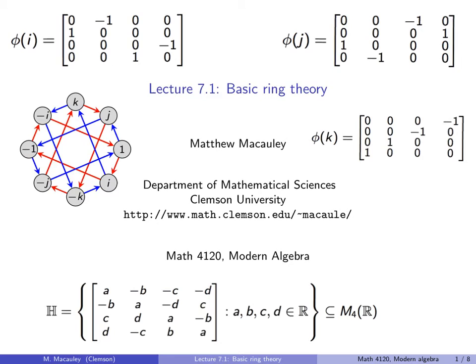The second such structure is usually that of a ring, which is a set with two binary operations, typically addition and multiplication, and a few other properties as well. Other structures that come up in a class on modern algebra might include fields, modules, algebras, or possibly a few others.